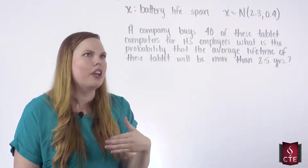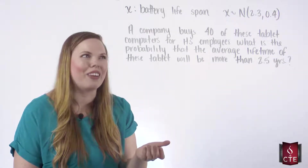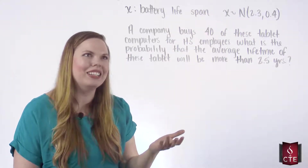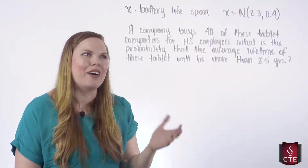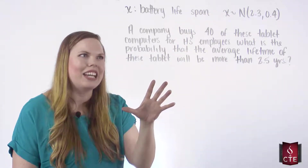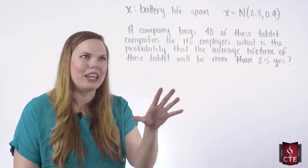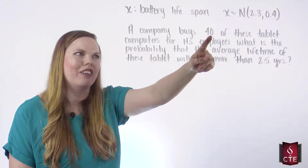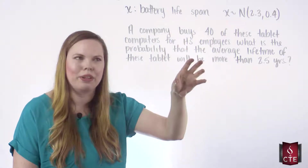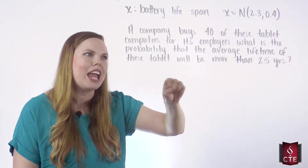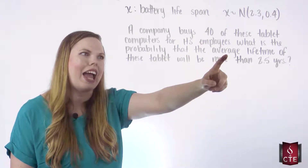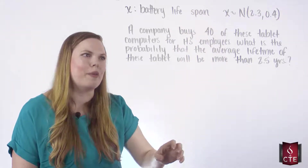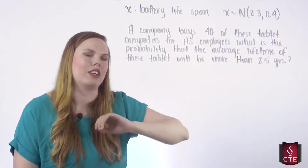We've also done a problem where we've been looking for X given some areas. But now we're going to look at a central limit theorem problem in that we are looking at 40 of these tablet computers that have been bought. We want the probability that the average of all these 40 will be more than two and a half years.